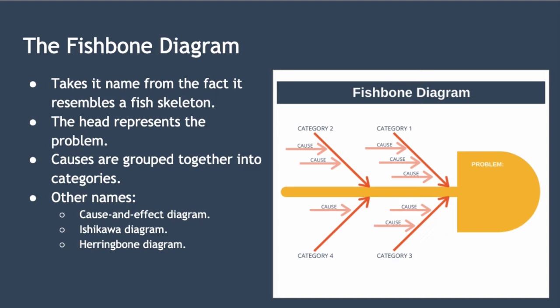You can use any categories you like. In manufacturing, it's common to use what's known as the five M's, which stands for man, machine, material, method and measurement. And in service industries, it's common to use the four S's, standing for surroundings, suppliers, systems and skill.